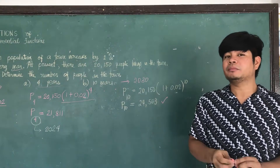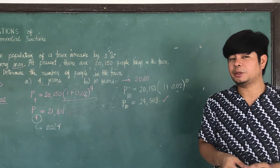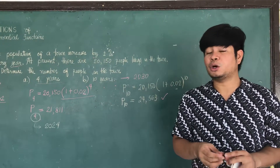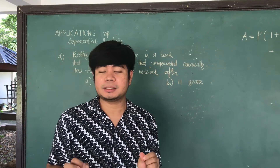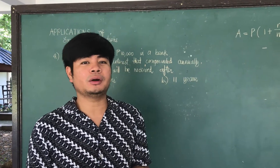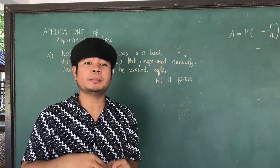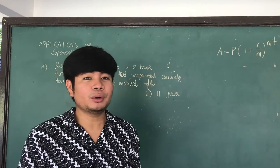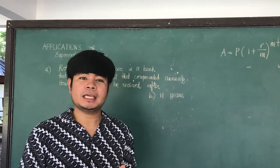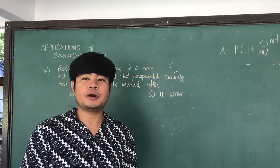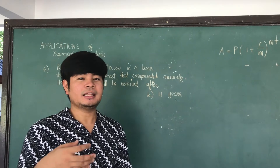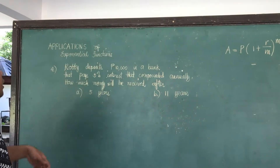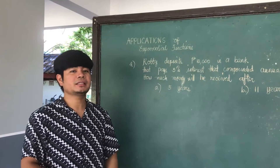That is very alarming as well. If we cannot control the number of people or control birth rates, there will be a time people are starving, so we need to be very cautious. When we talk about money — borrowing through loans or depositing money in a bank — exponential function also illustrates the increase of money.